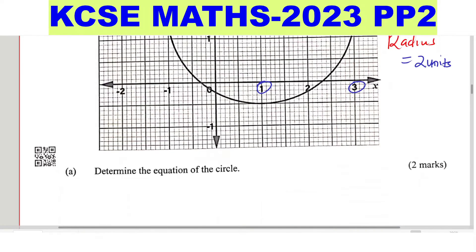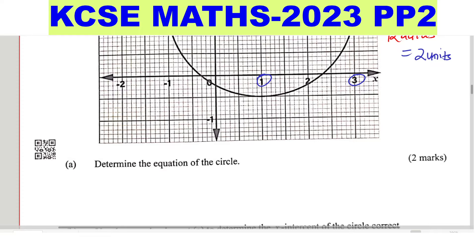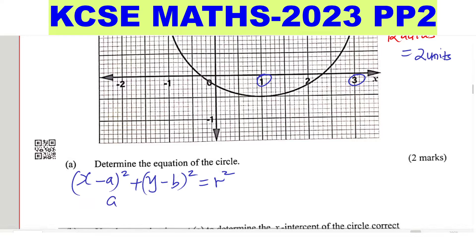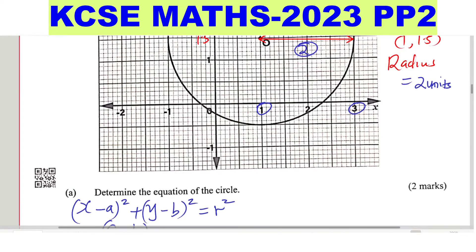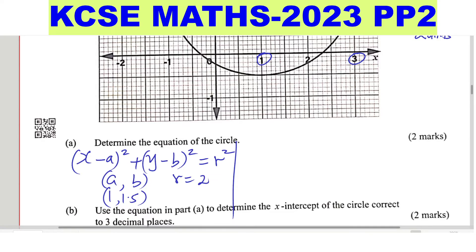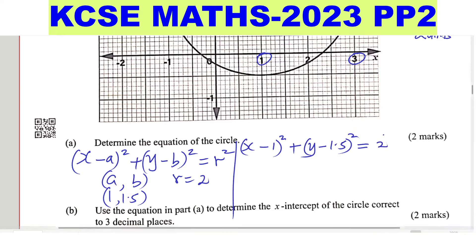We need to understand the standard format of the equation of the circle. It is given by (x − a)² + (y − b)² = r², where the center is (a, b). In this case, a, b is 1, 1.5, and the radius is 2 units. So substituting: (x − 1)² + (y − 1.5)² = 2².